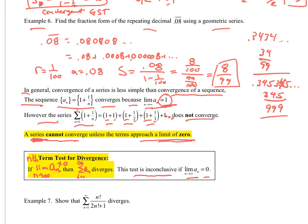So in other words, the terms can go to 0, but it does not tell you that the sum will converge. But if you do have the terms that don't go to 0, the limit of the terms doesn't go to 0, then the sum will definitely diverge. So let's try some of these and see what happens.